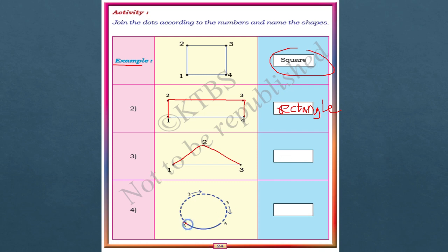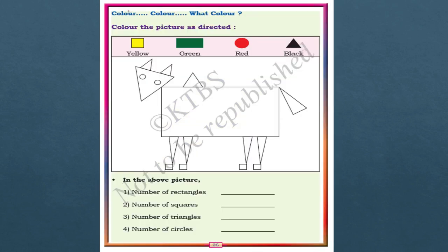And joining points 1 to 2, 2 to 3, 3 to 4 for the curved shape gives a circle. Now, let us play a coloring game. You have to color square with yellow, rectangle with green, circle with red, and triangle with black. While coloring, count them and write the numbers: number of rectangles, squares, triangles, and circles.